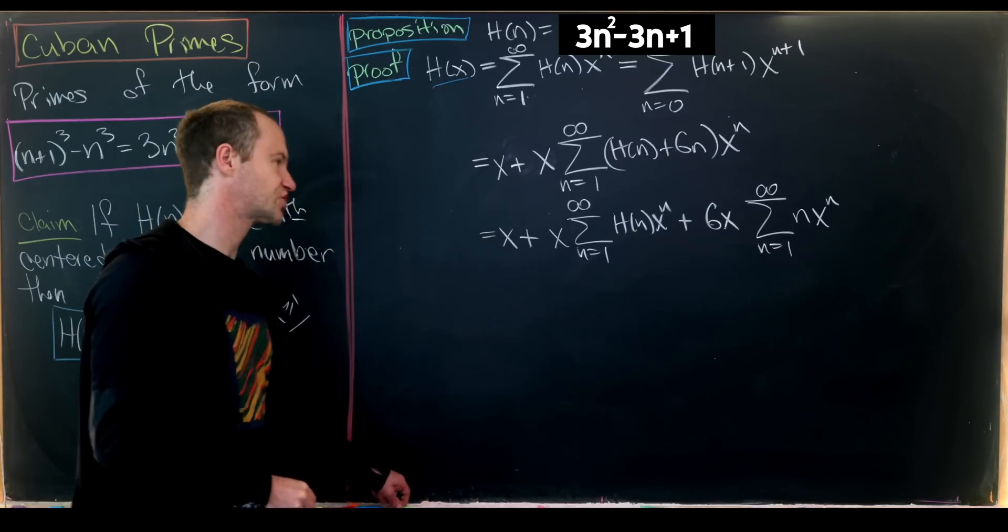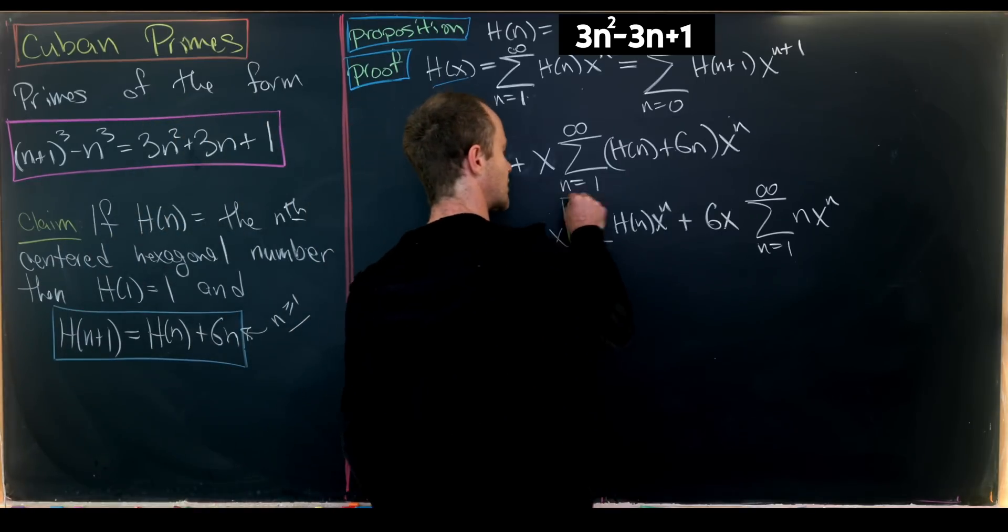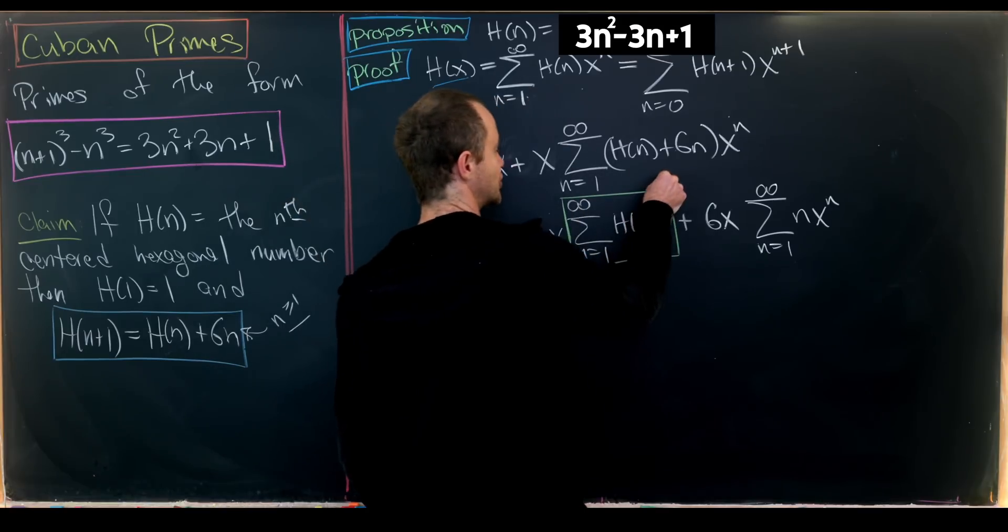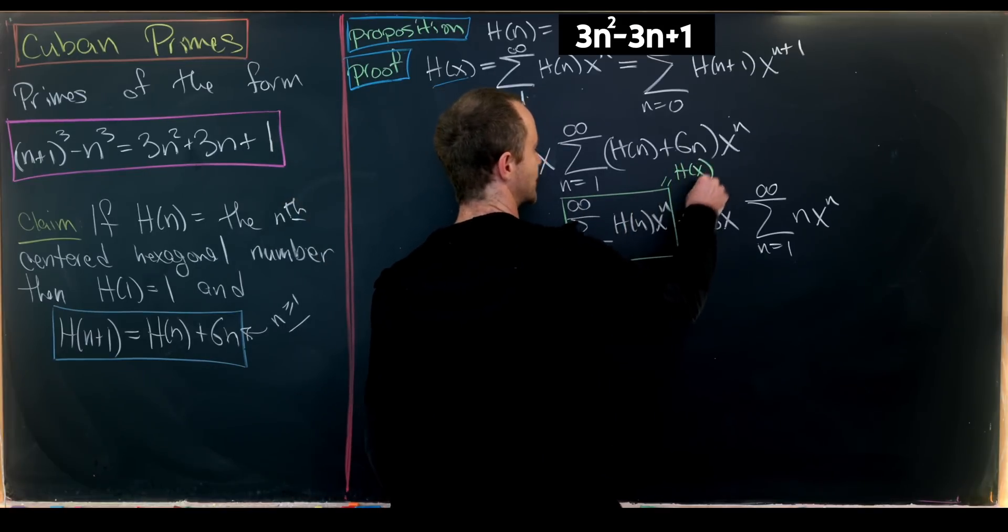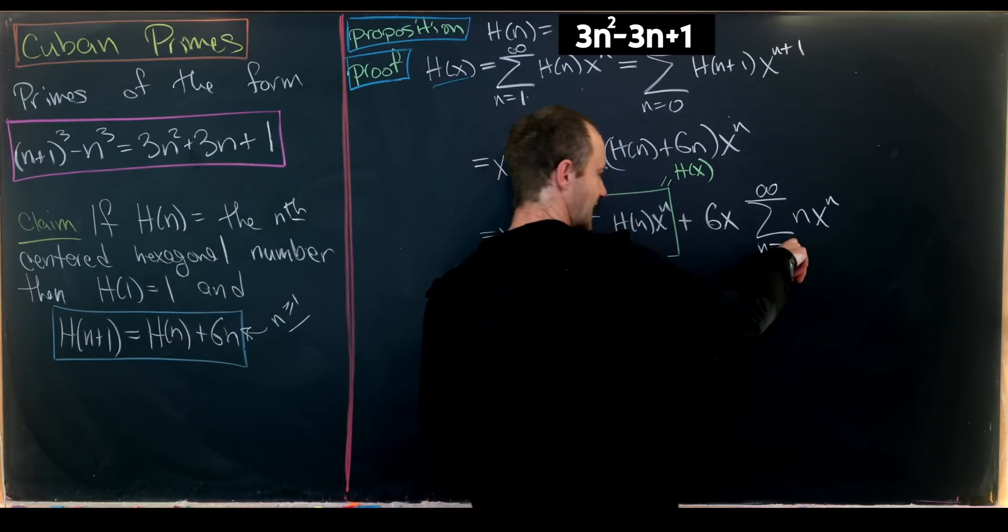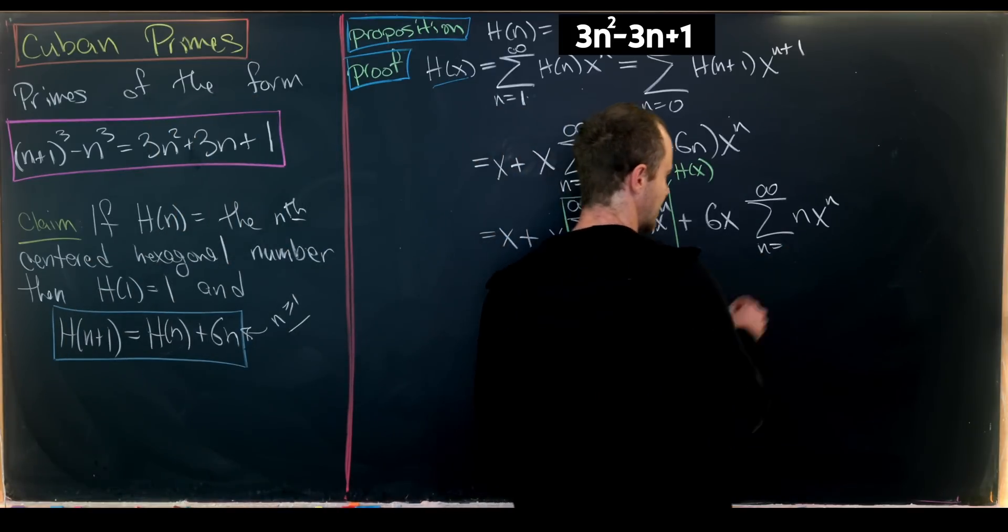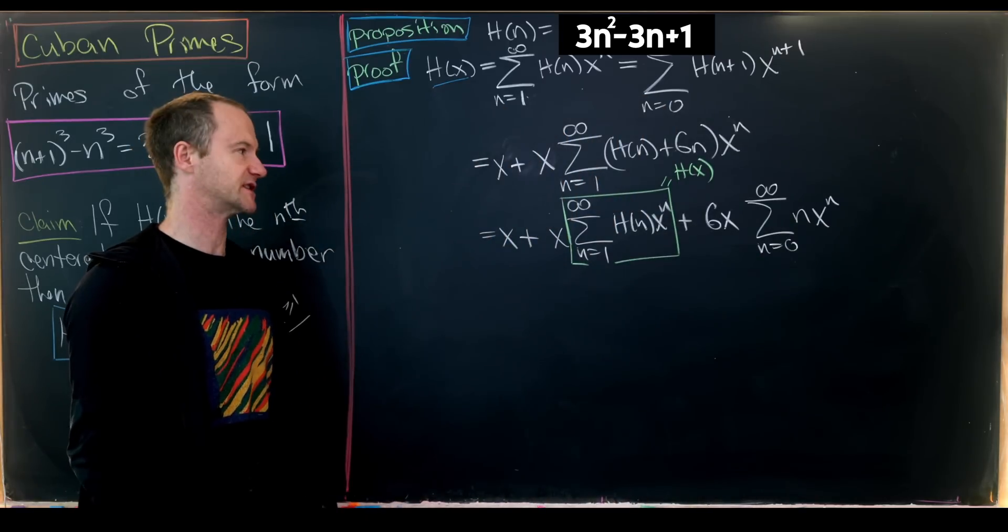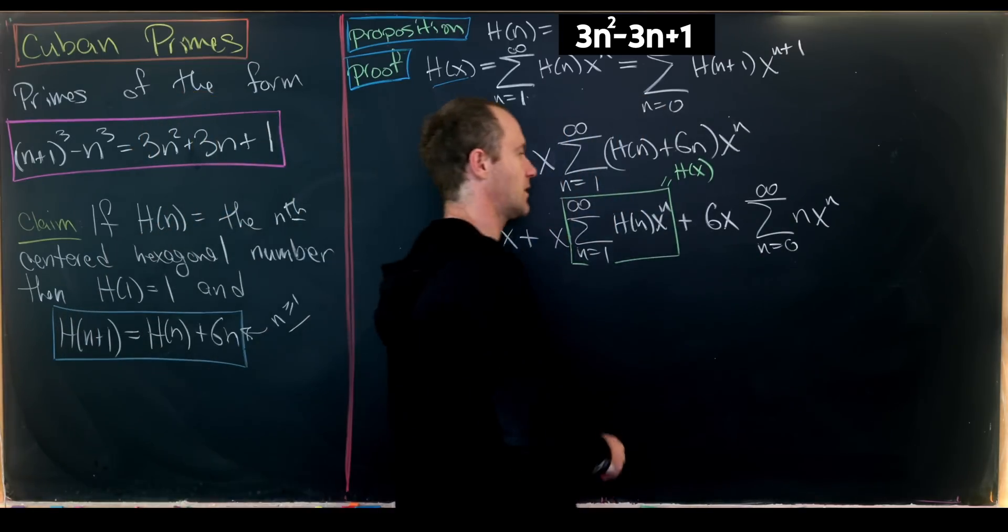Rewriting: H(x) = x + x·Σ(n=1 to ∞) h(n)x^n + 6x·Σ(n=1 to ∞) nx^n. The first sum is exactly our generating function H(x). The second sum can start at n=0 since the 0th term equals 0.